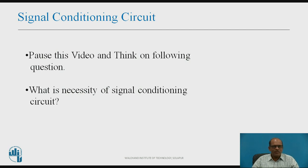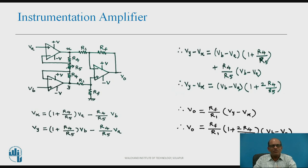Now we will understand signal conditioning circuits. The necessity of a signal conditioning circuit is that the differential output of the bridge is very small and needs to be amplified for controllers. Therefore, to amplify the small differential output produced by the transducer bridge, we require a signal conditioning circuit. In this design, we are using the instrumentation amplifier as the signal conditioning circuit.